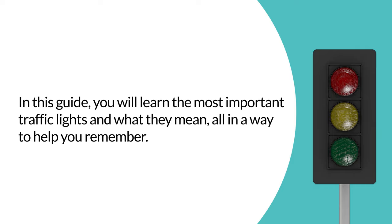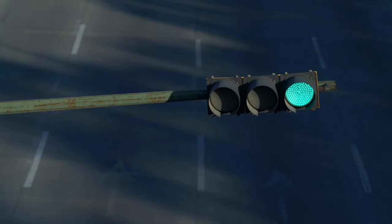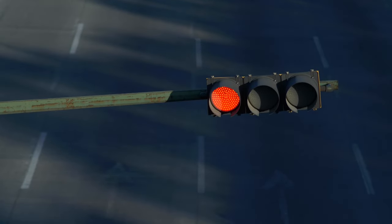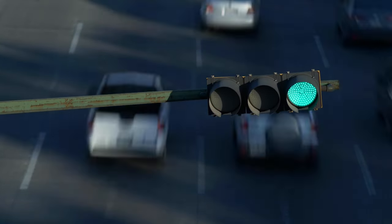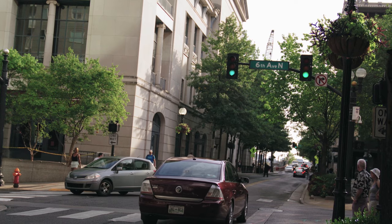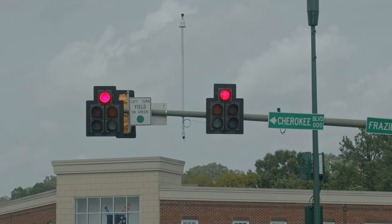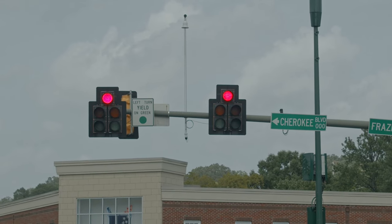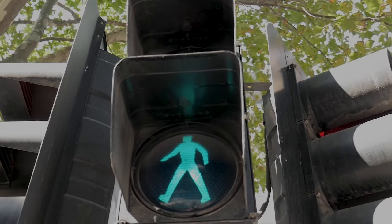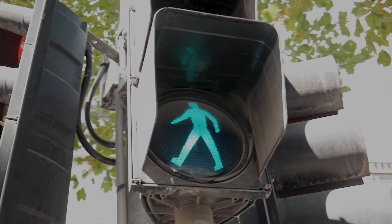In this guide you will learn the most important traffic lights and what they mean, all in a way to help you remember. Unless you learn about traffic lights in a structured manner, things can get a bit messy. We often get asked if there's an easier way to learn about traffic lights, as it can feel like there are a million different types that you need to know: red, yellow, green, flashing, and steady — the list goes on and on.